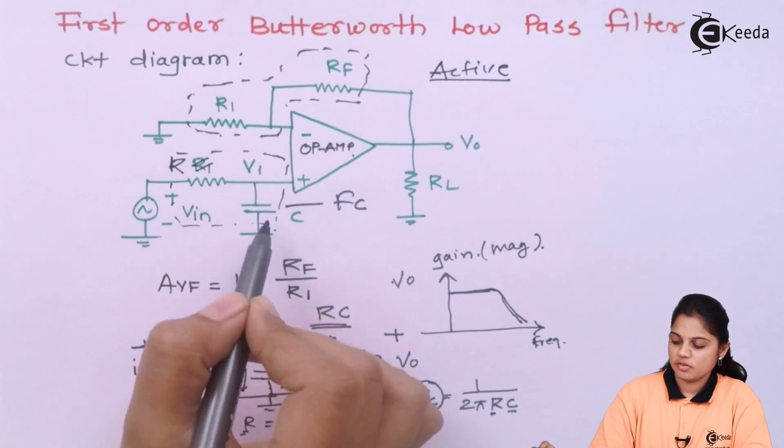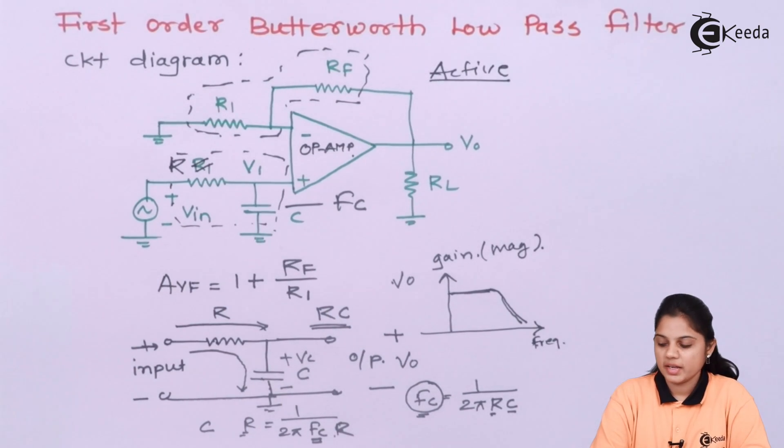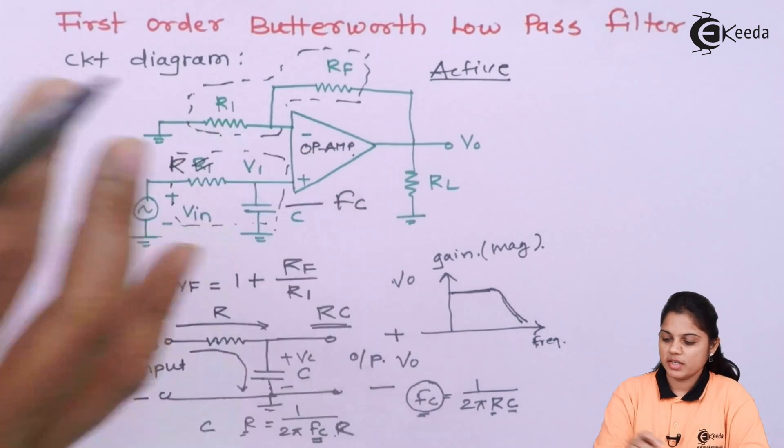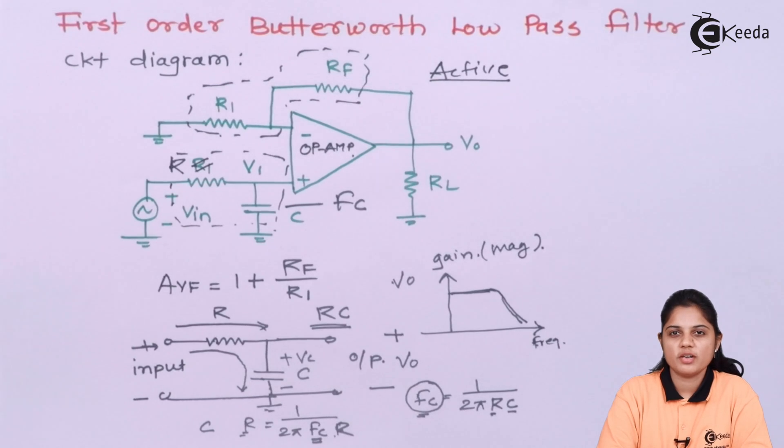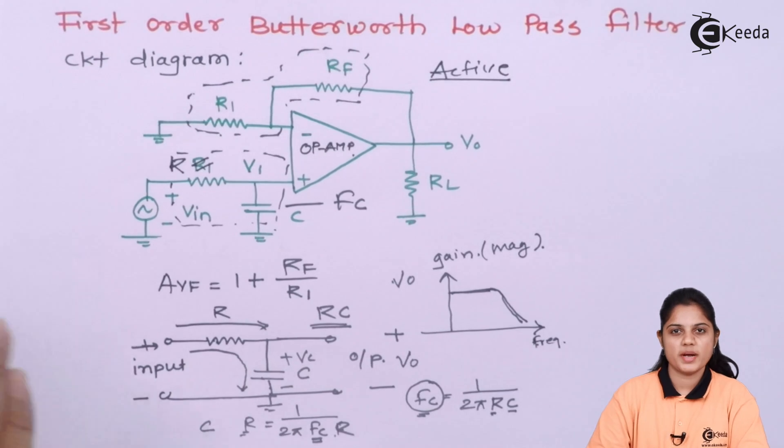So that's why these filtering components are connected. Now this is about circuit diagram. Now in the next video, we are going to see, we are going to derive the output voltage expression for the low pass filter.